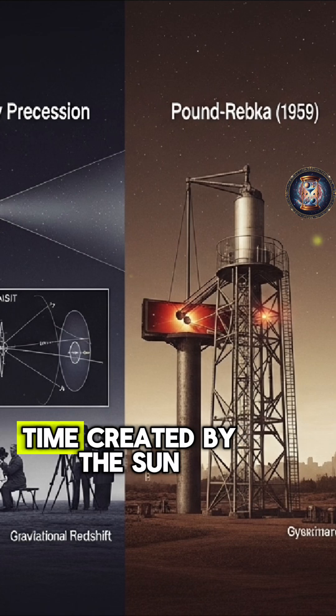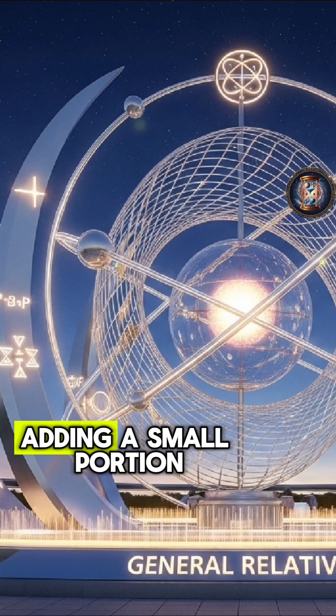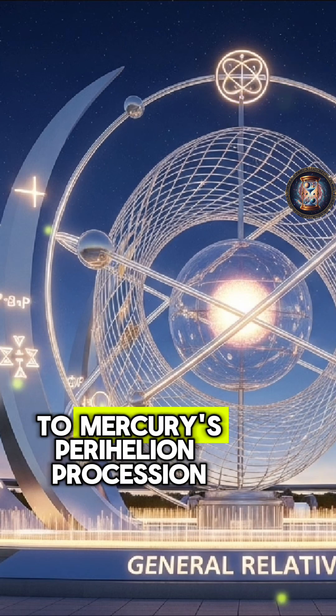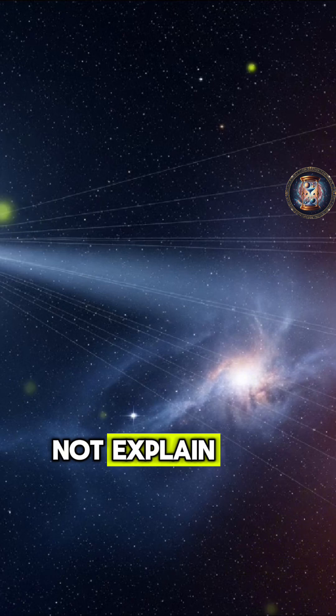The curvature of spacetime created by the Sun was precisely calculated, adding a small portion to Mercury's perihelion precession that Newtonian theory could not explain.